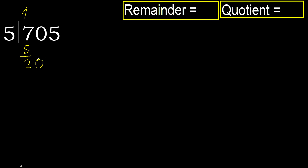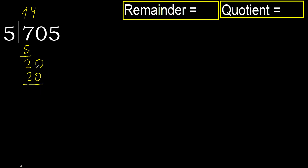Next: 20. 5 multiplied by 4 is 20. It is not greater. Subtract: 20 minus 20 is 0.